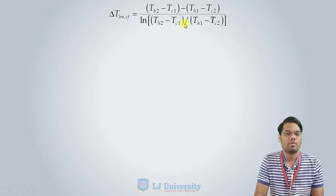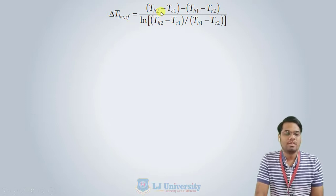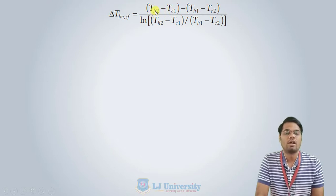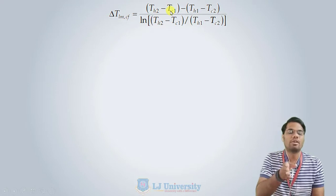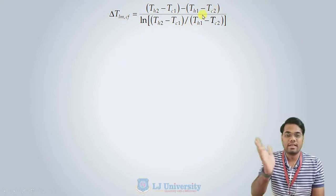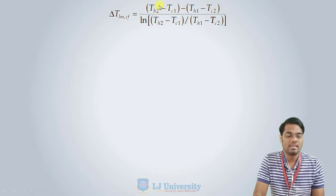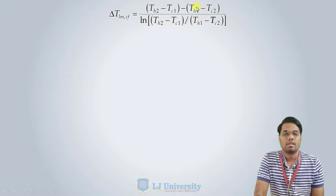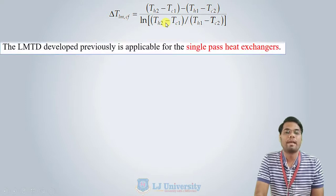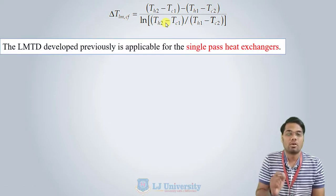We derived an equation for the parallel and counter flow heat exchanger for the LMTD — logarithmic mean temperature difference — which uses TH2 minus TC1 (the temperature difference at the exit side for counter flow) and TH1 minus TC2 (the temperature difference at the inlet side), giving delta T1 and delta T2. This equation, delta T2 minus delta T1 divided by ln(delta T2 / delta T1), cannot be applied for the multipass or cross flow heat exchanger.